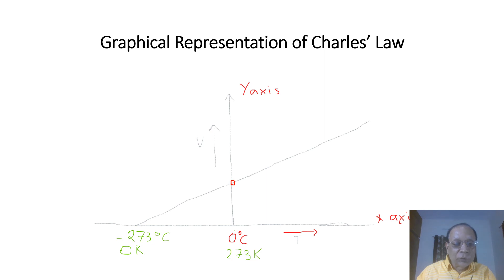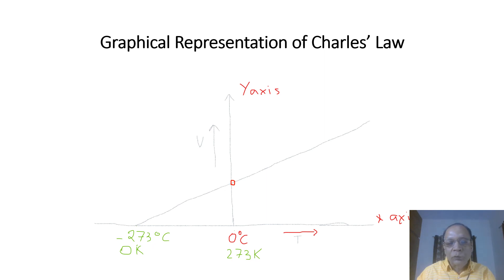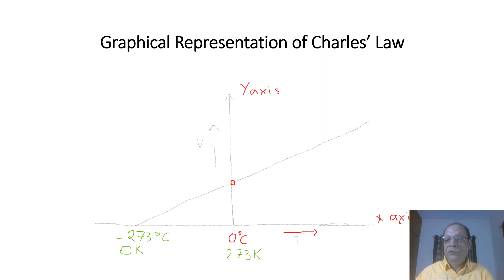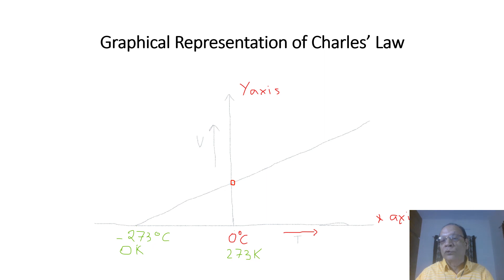This point is known as 0 Kelvin. Proceeding 273 steps forward, we have 0°C as 273 Kelvin. There is no temperature in the universe less than 0 Kelvin — this is the temperature at which all types of motion come to a standstill, because when temperature is 0 Kelvin, the energy in the body is also zero.